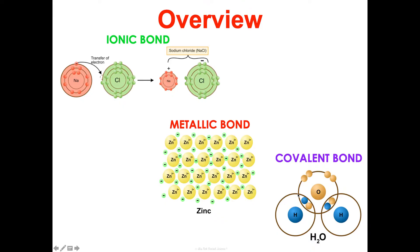Even just from looking at these pictures you might be able to see how they're different. In the ionic one, you see an arrow showing where the electron is going — sodium loses one and chlorine gains one, so ionic bonds are transferring electrons between a metal and a non-metal. In the covalent bond, oxygen and hydrogen, both non-metals, share electrons circling around. Now look at the metallic bond: it's just a bunch of zinc atoms with all the electrons kind of floating around together — no clear transfer or sharing pattern.